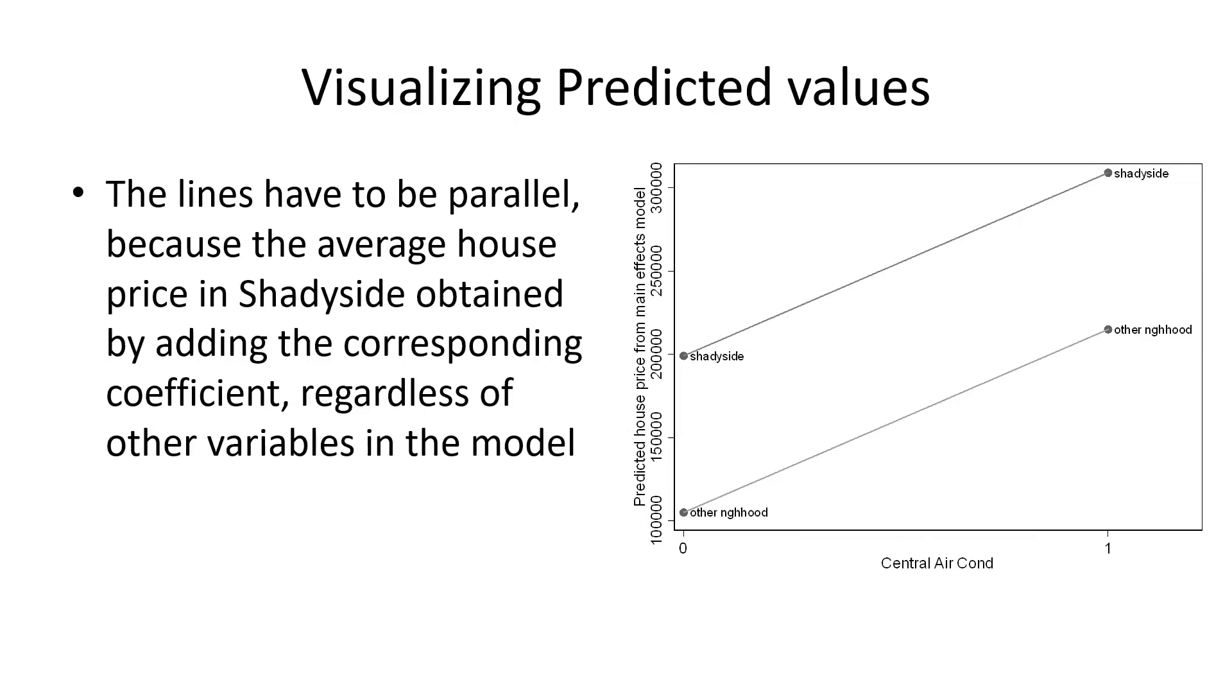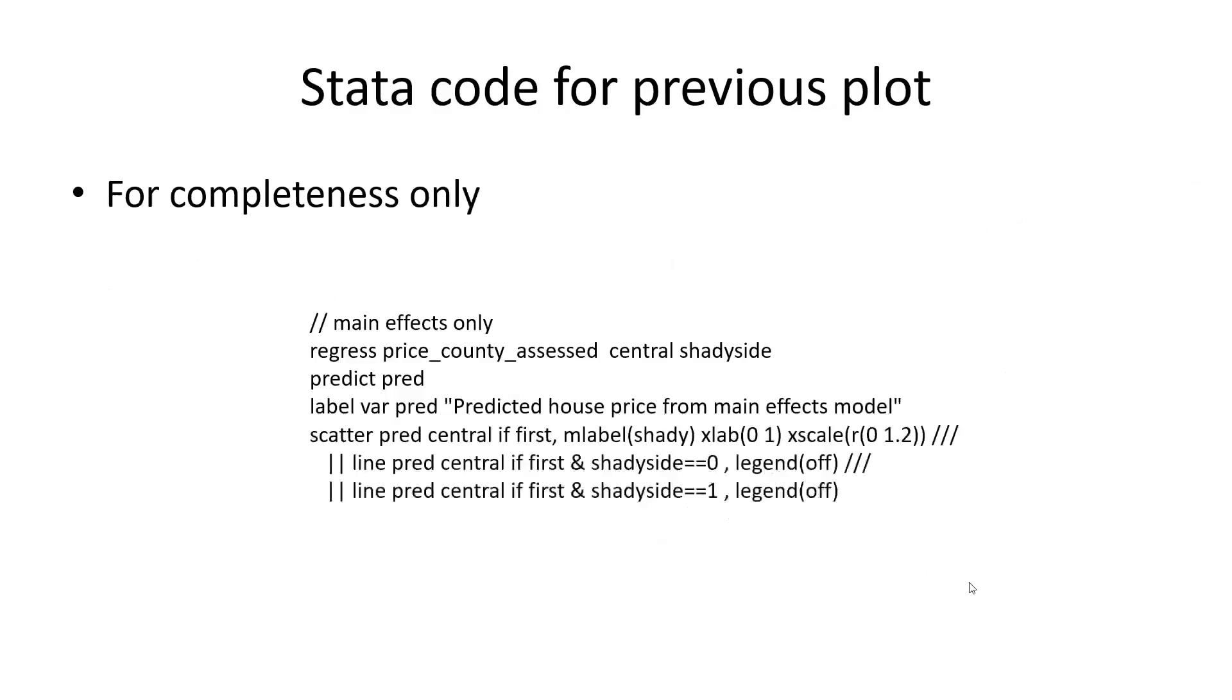You might wonder why did I put in central air conditioning in here, zero one, and then other neighborhood and Shadyside. I could switch those two things and I could put neighborhood in here, Shadyside versus not, and no central air versus central air here. The lines would be a little different but the message would be identical. So we're not getting a different message by deciding which variable goes on the x-axis. Here is the data code for completeness.